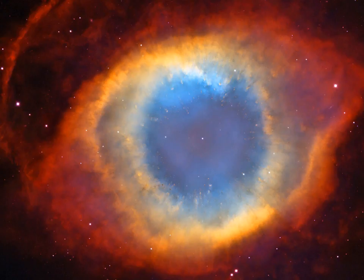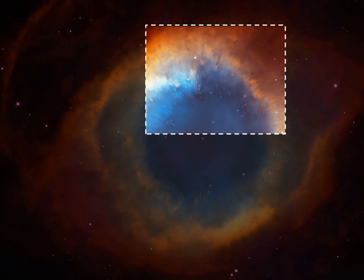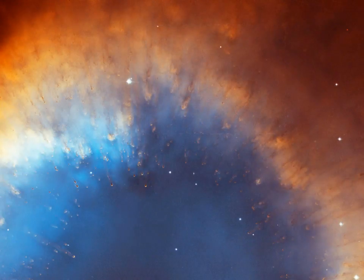I'll leave you with this lovely Hubble telescope image of the Helix Nebula — a planetary nebula located about 700 light years away in the constellation of Aquarius. It's amazing that we're able to see this sort of detail. I hope you like it too.